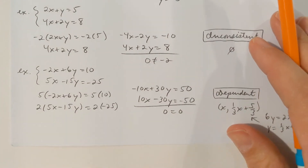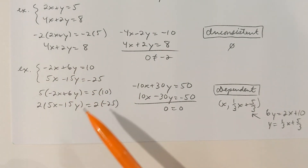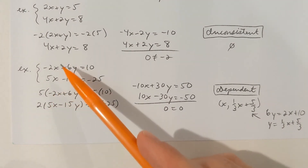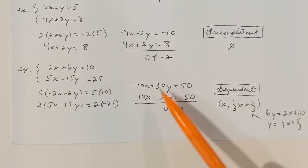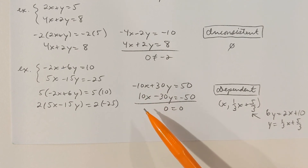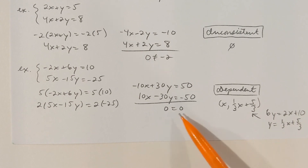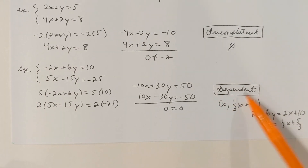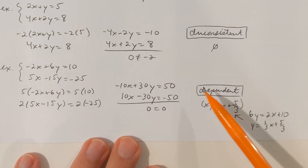Here's one more system of equations using the elimination method. If we plan to eliminate x, I'll have to work with both equations — multiply the top one by 5 and the bottom one by 2. When you add them, negative 10x plus 10x is 0. But y is also eliminated, giving us 0 equals 0. That is a true statement, which indicates a dependent system — there are infinitely many solutions to this system. Here would be my answer written as an ordered pair.